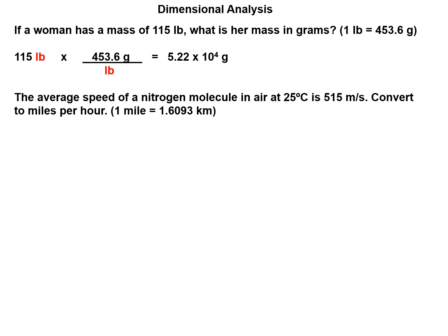A little bit more complicated problem. The average speed of a nitrogen molecule in air at 25 degrees Celsius is 515 meters per second. Now we want to convert that to miles per hour. We know that one mile equals 1.6093 kilometers from the conversion chart. The 25 degrees Celsius just tells you at that temperature the speed is 515 meters per second. What you'll learn later in chemistry is molecules tend to speed up at higher temperatures.